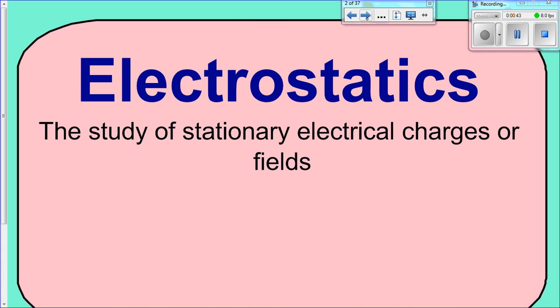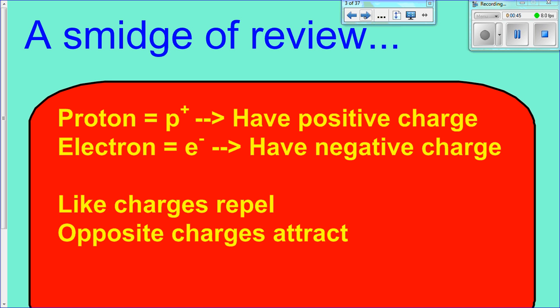All right, so first of all, to get us started, we need to do a little bit of review from chemistry if you took chemistry. And if you haven't taken chemistry, then this is either new to you or you maybe have not seen this in a while. And so before we get started, there's two what we call subatomic particles we need to be familiar with. And that is a proton and an electron. Now, all matter consists of protons and electrons. And depending on how many you have of each will depend on what the charge is.